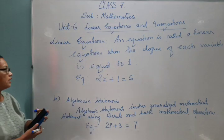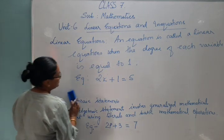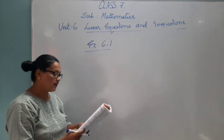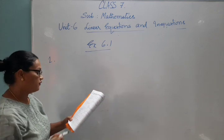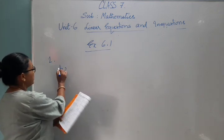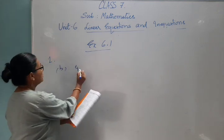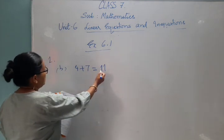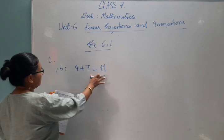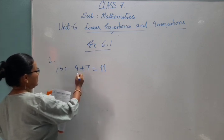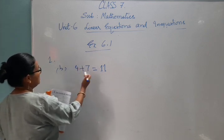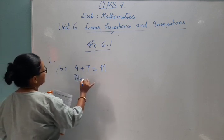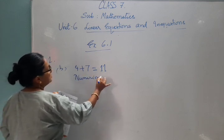We will go to exercise 6.1. The first question asks you to identify the numerical statement from the following. Number 1B: four plus seven is equal to eleven. When we look at both sides, we don't see any variable — any alphabetical letter. Both sides have only numbers, so this one is called a numerical statement.